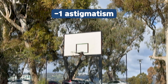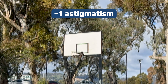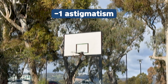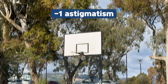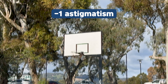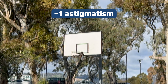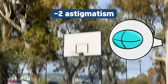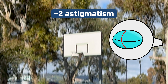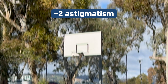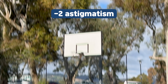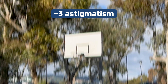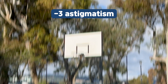Now with 1 diopter of astigmatism, it appears that the black lines are not as bold as before. The horizontal lines are thinner, and even the hoop is less visible. Notice how the vertical lines appear bolder than the horizontal lines. This is because an eye with astigmatism essentially has two focal points — one for the horizontal and one for the vertical. In this example, the vertical lines are still in focus whereas the horizontal lines are not. This becomes super obvious when we get to minus 3; at this point, the horizontal lines are almost becoming invisible.